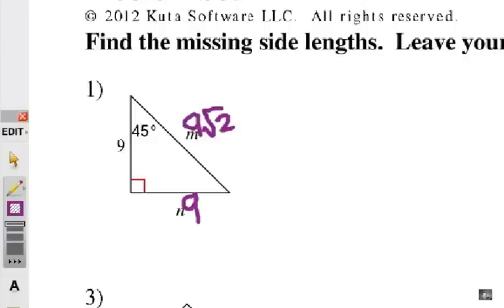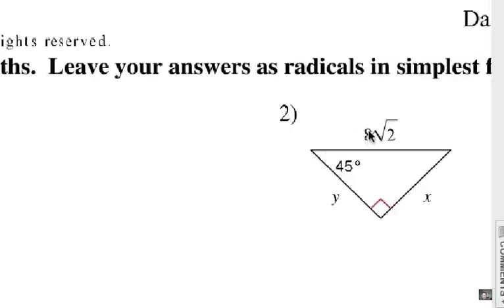Now, let's go ahead and go to number two. Here, the hypotenuse is 8 radical 2. So if we divide that by radical 2, that means each of the legs, x and y, have to be 8. Simple as that.